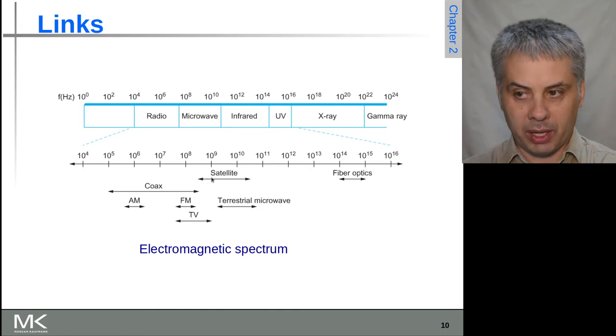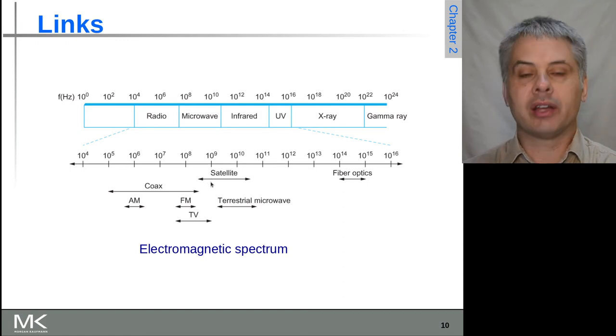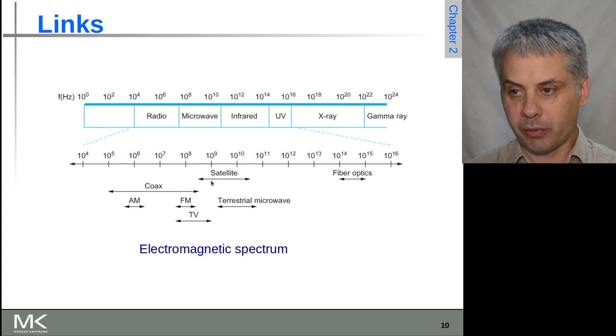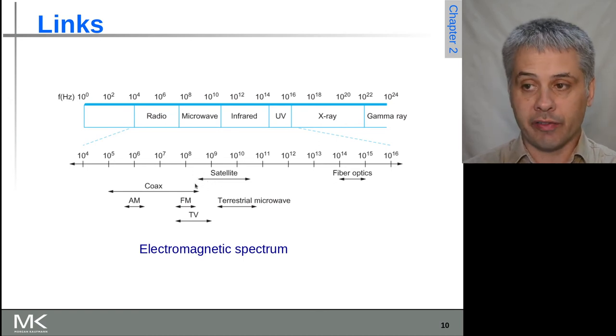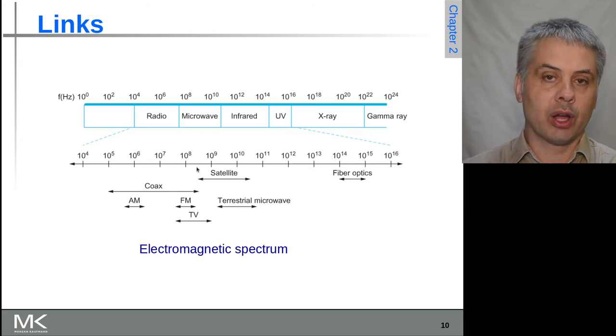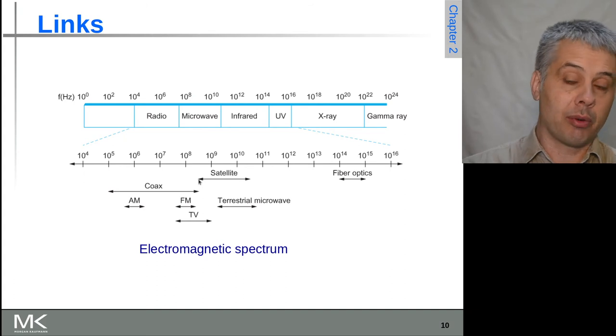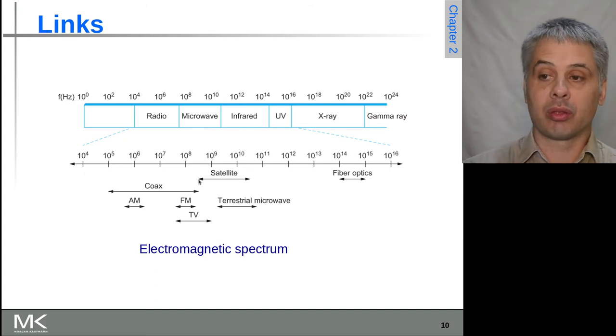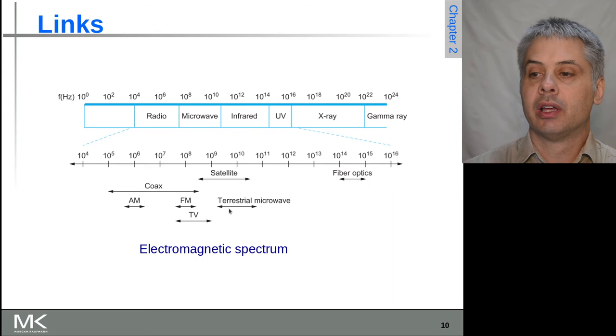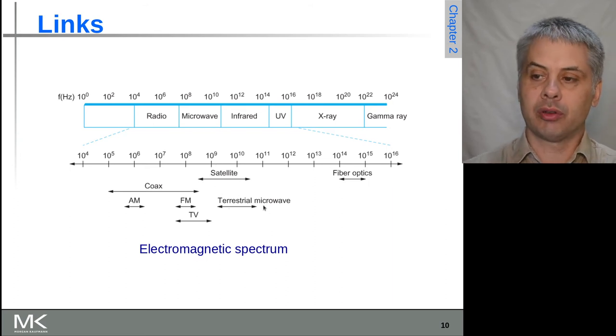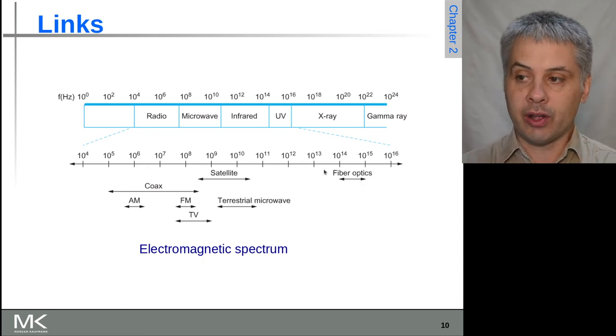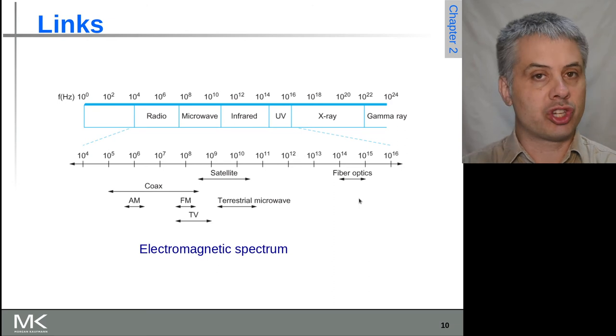Satellites I would say generally speaking tend to be more from sort of 10 to the 9 hertz, so from a gigahertz and above. But there are some satellites that are well down into the UHF band here in sort of the few hundreds of megahertz. The emergency beacons, for example, operate at 406 megahertz, which is well and truly down here. And then terrestrial microwave from about a gigahertz up to some tens of gigahertz. Fiber optics of course are operating at a much higher frequency now because it's generally speaking infrared, visible or UV light bands.